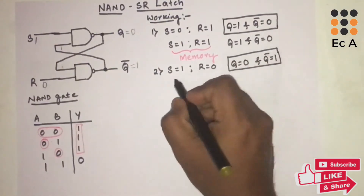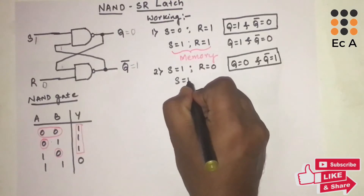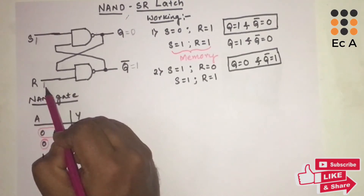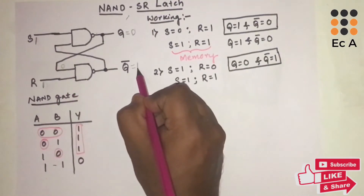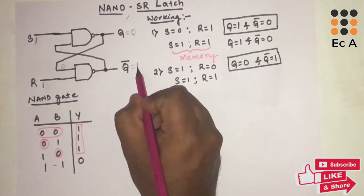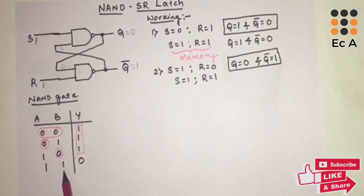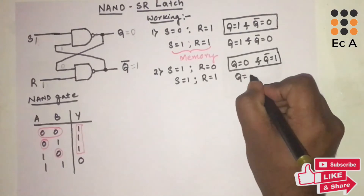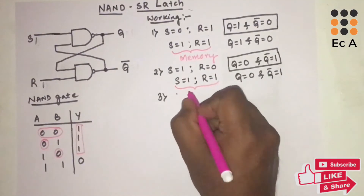Now let us make S=1 and R=1 again. The previous output of Q was 0, so this 0 appears at the input. With inputs 0 and 1, the output Q remains 0. We get the same output as before, so when S=1 and R=1, the previous state is retained. This state is again known as the memory state.